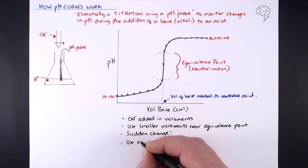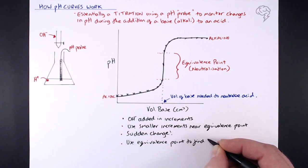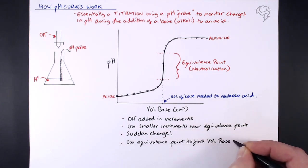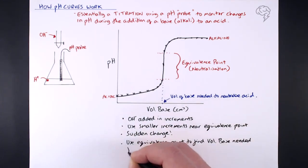Now we can use that equivalence point, that vertical section, to find the volume of the base needed for neutralization. So there's some basic things that you can tell from this pH curve. There's some more in-depth things we can use a pH curve for, but we'll talk about those in the next tutorial.